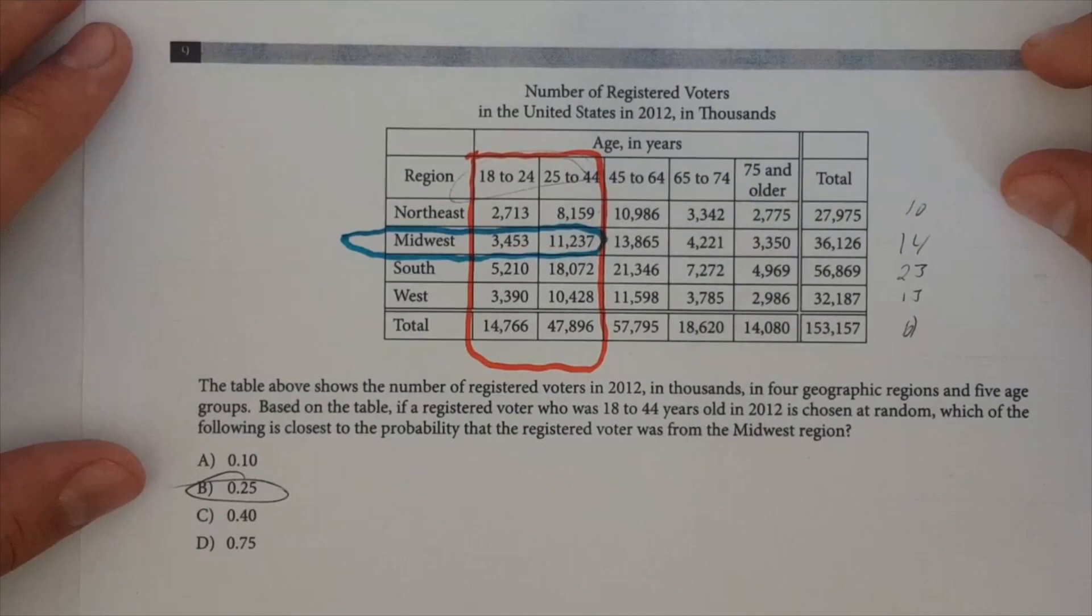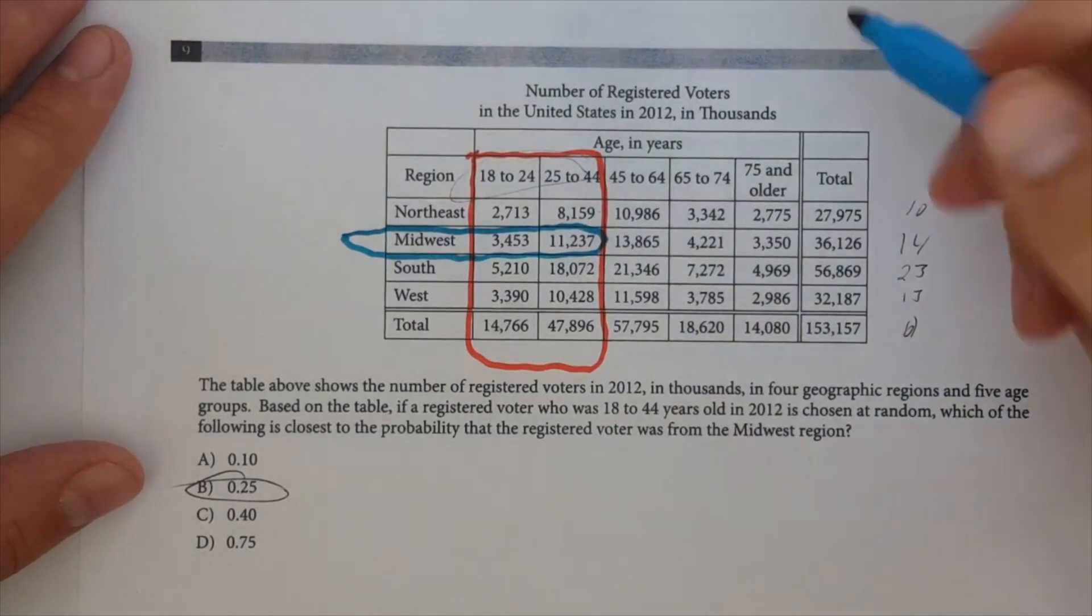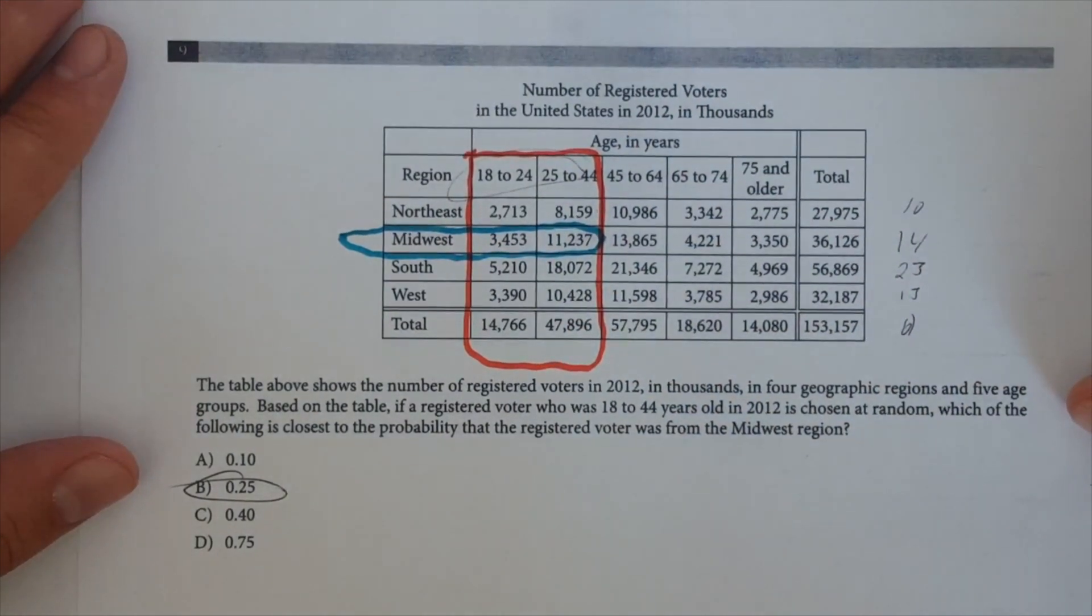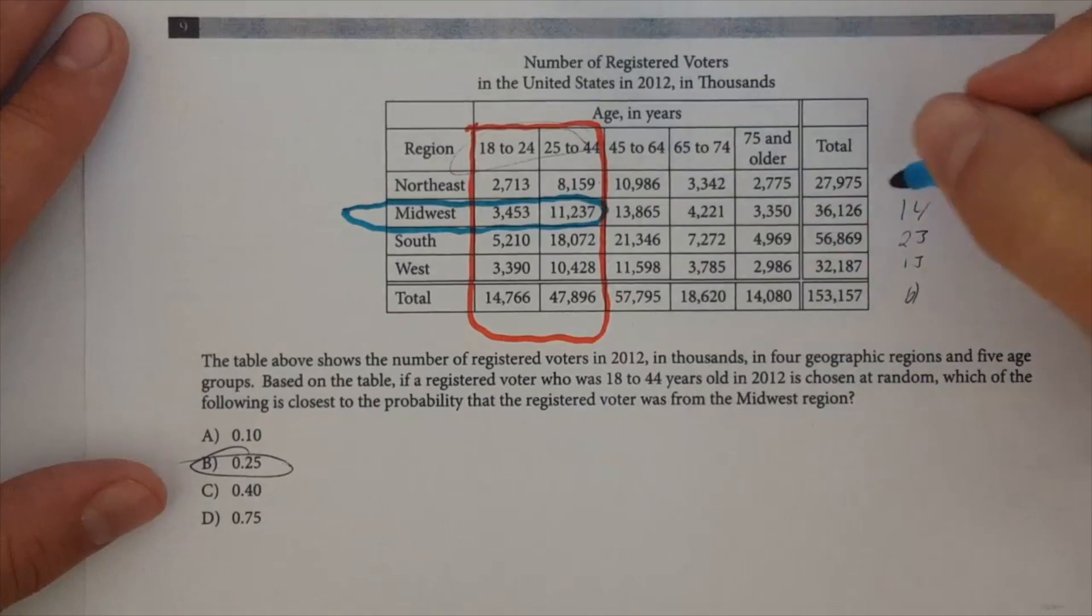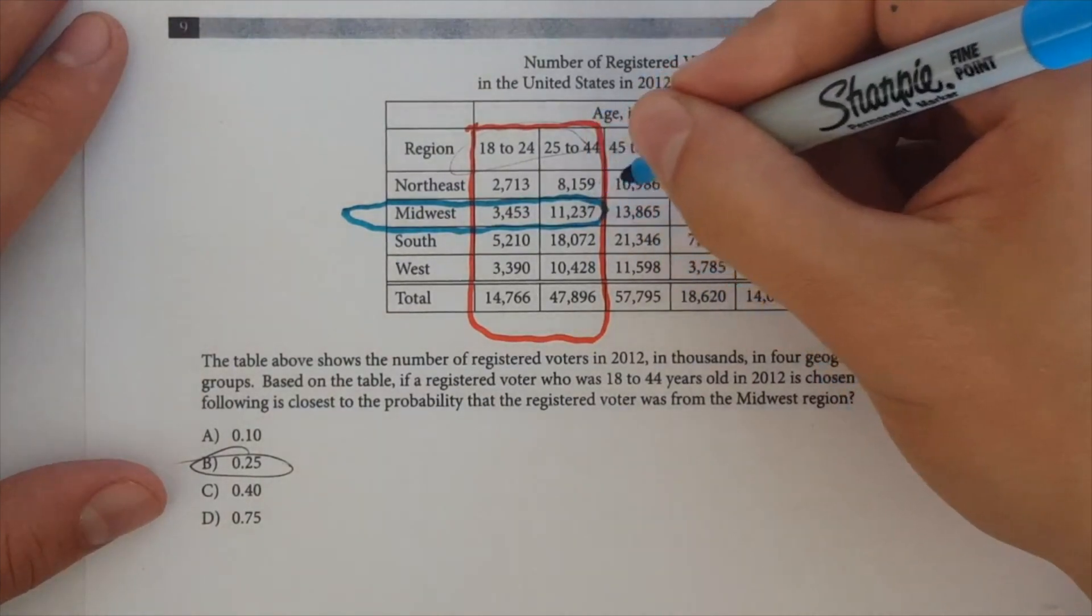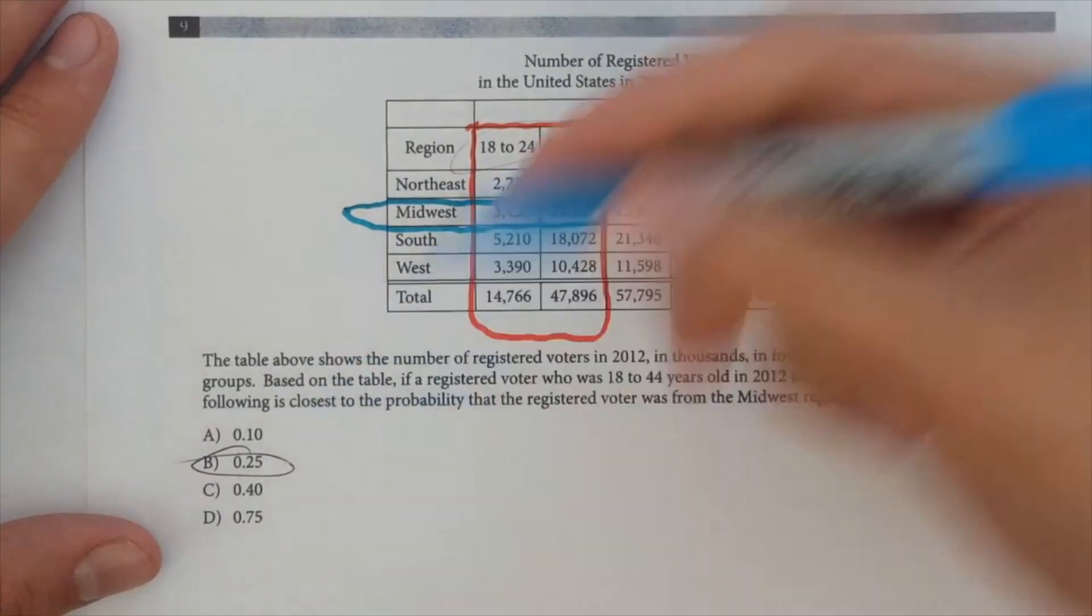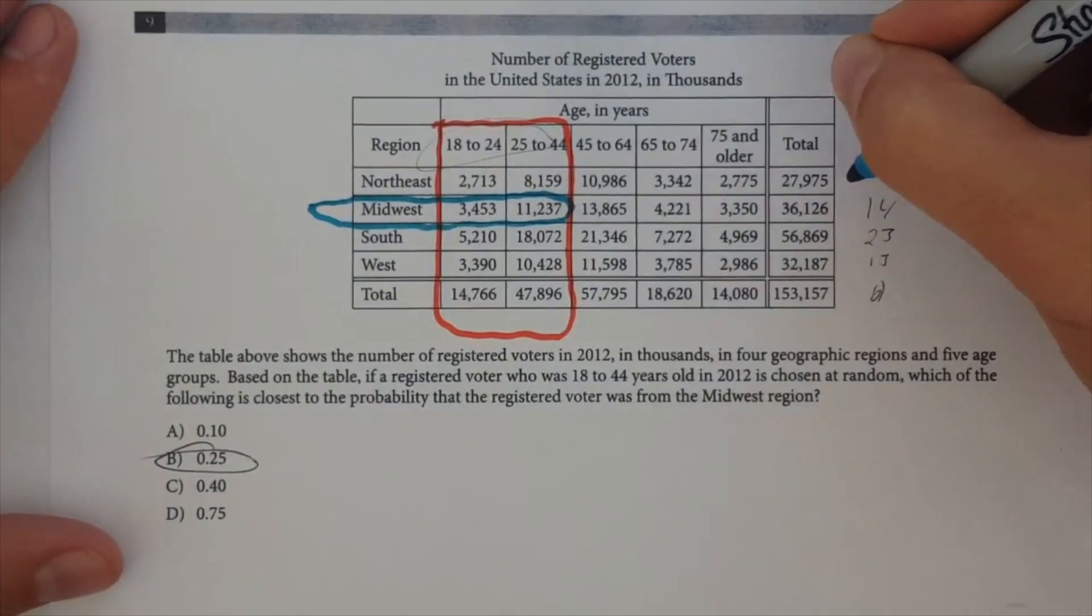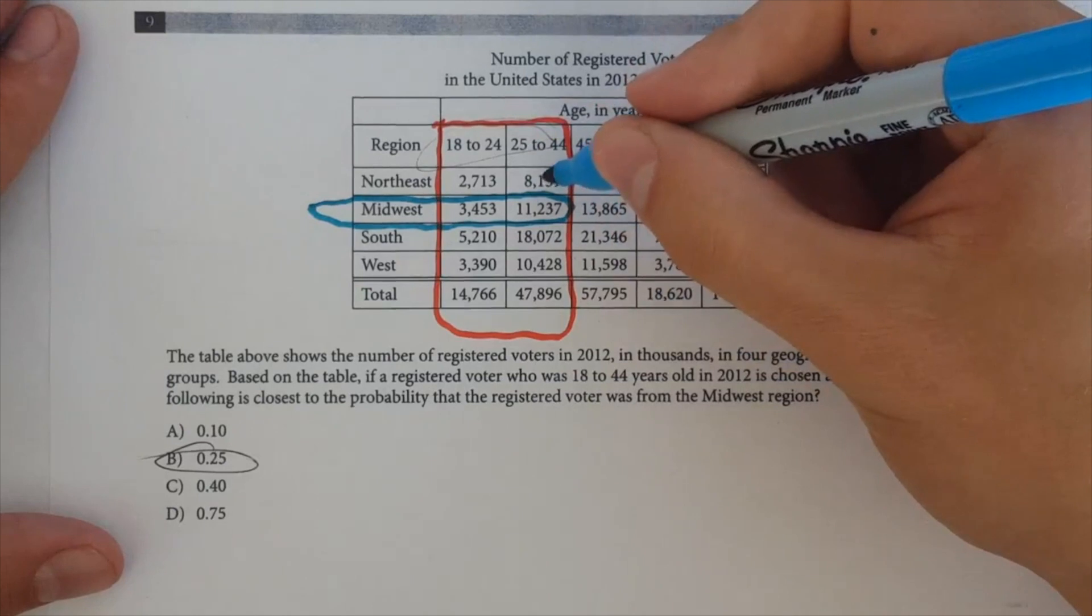Which of the following is closest to the probability that the registered voter was from the Midwest region? So, Midwest is here. Okay. So, one of the main things that they're testing here on the SAT is just, do you know how to read tables? And that's, you know, an important thing to be able to do. So, what you would want to do is you're going to have to add all of these columns up together. Okay. And so, we can do that, why don't we just do that right here? So, again, I would do this with a calculator, but these numbers down here, these are pretty rough. So, you can, I can be rough with this, and I'll still be, you know, correct, just because 10% is much different than 25%, which is much different than 40%.